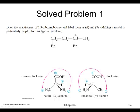Here's a chiral carbon where we draw a three-dimensional picture. With the priorities arranged, we identify the S and R enantiomers. The S enantiomer is found in nature; the R enantiomer is not naturally occurring and must be synthesized.